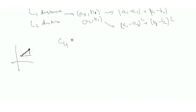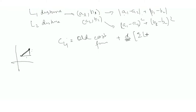The cost function of L1 is nothing but the old cost function — the one we used for linear regression — plus alpha times the summation of L1 distances of all the thetas. Alpha is the penalty cost that we want to apply.